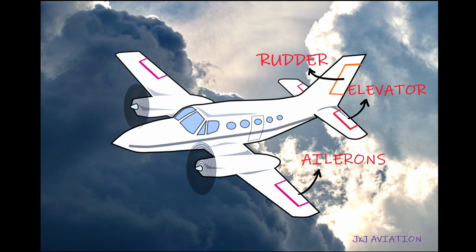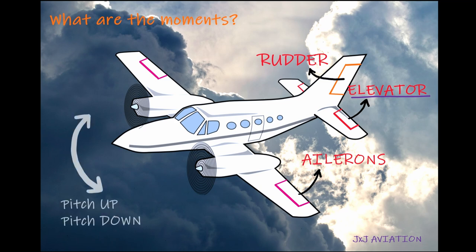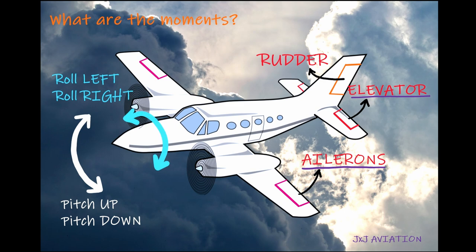What are the moments created by these flight controls? The elevators create a pitch up or a pitch down moment. The ailerons create a rolling moment towards the left or the right. The rudder creates a yawing moment towards the left or the right.